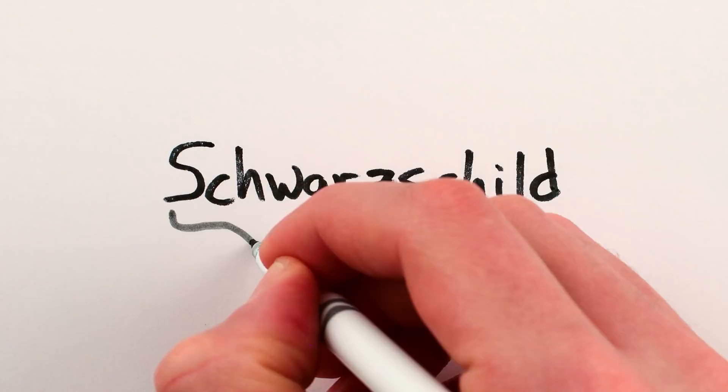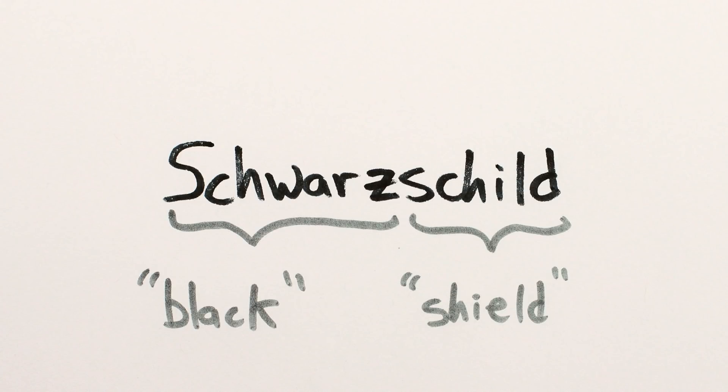Schwarzschild, by the way, means black shield in German, which is bizarrely appropriate for the physicist after whom black hole event horizons are named.